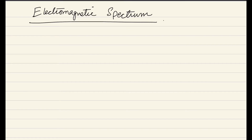Hello everyone. Now we have to discuss the topic of electromagnetic spectrum. What is an electromagnetic spectrum? So the electromagnetic spectrum is basically the set of all the light rays that are arranged on the basis of their frequency and their wavelength.